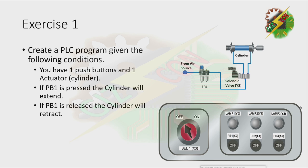Create a PLC program given the following conditions. You have one push button and one actuator. If PB1 is pressed, the cylinder will extend. If PB1 is released, the cylinder will retract.